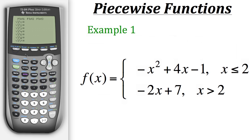So when we do that, we'll first put in the first function as normal: negative x squared plus 4x minus 1. Now we need to set the condition where x is less than or equal to 2. The way we do that is, whenever we're done putting in this expression, we'll just hit divide, and then in parentheses we'll put x is less than or equal to 2.